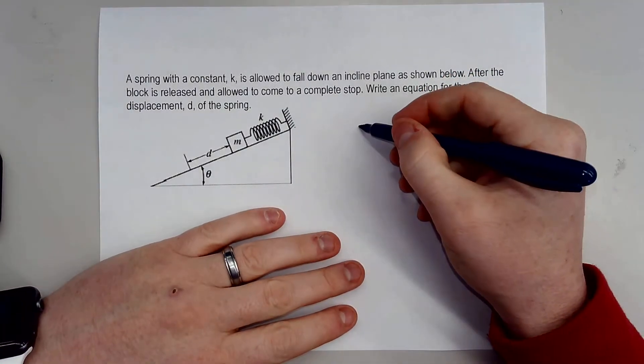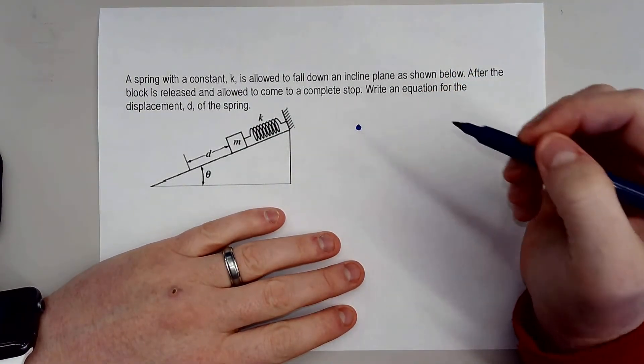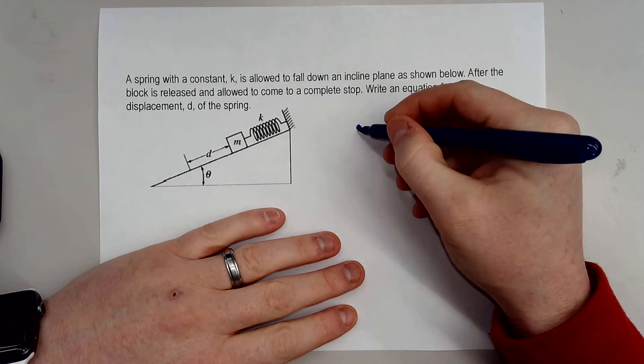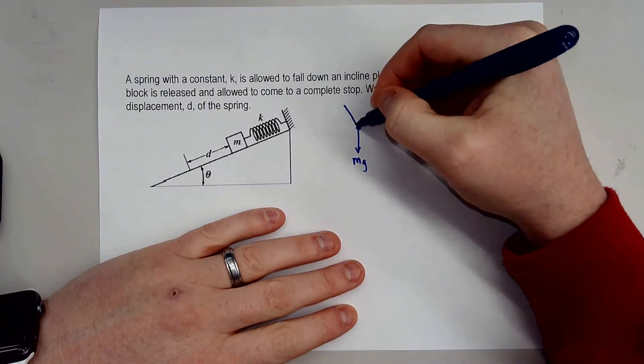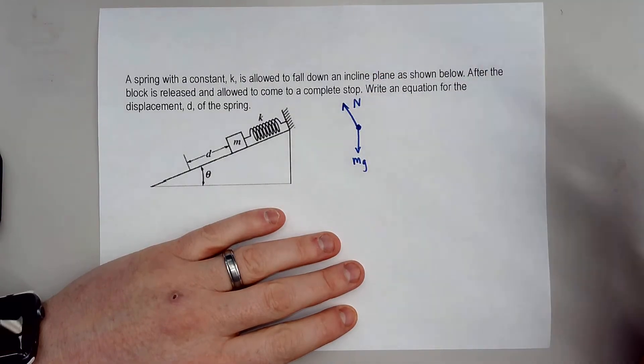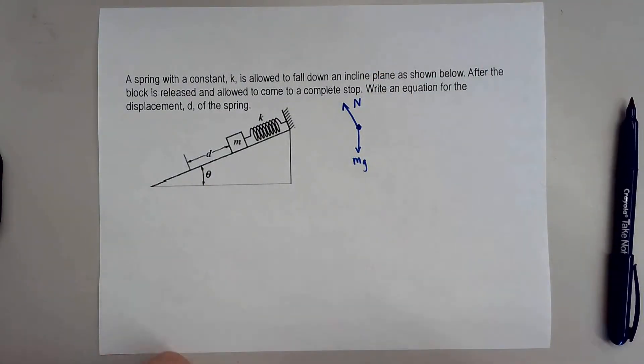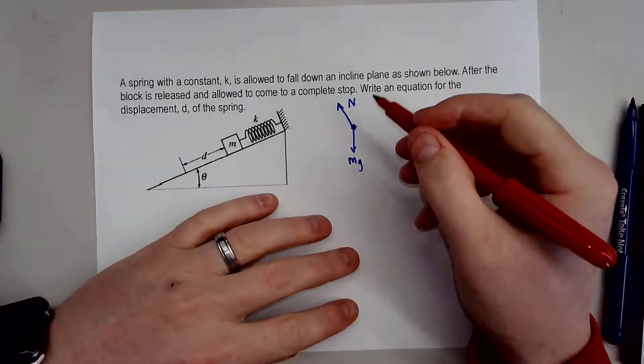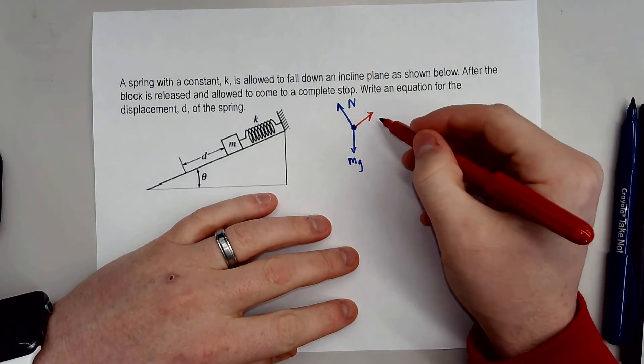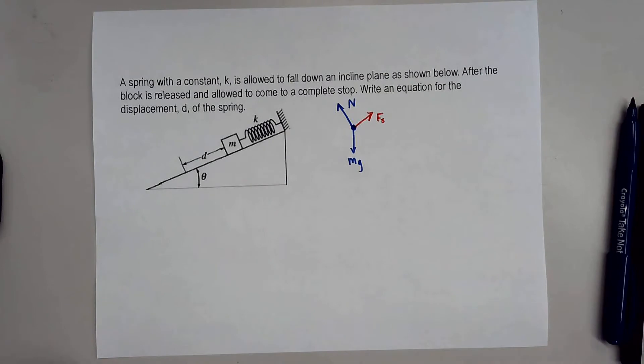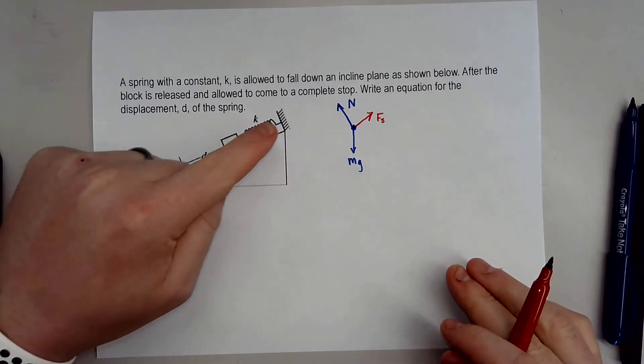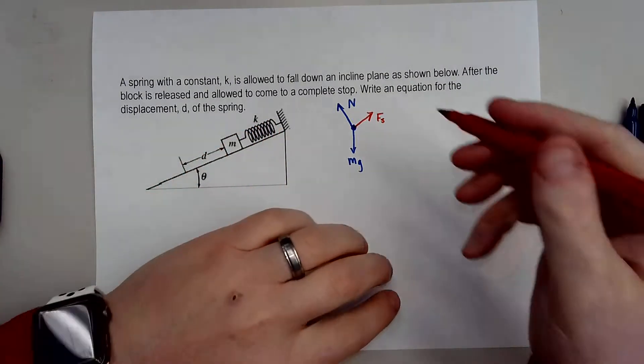Well, the first thing we need to do is draw the free body diagram. I'm going to draw this dot diagram for this block. In this situation this block does have some mass times gravity, it does have a normal force, and there actually is a force that's pulling this object back up the ramp and that's actually the force of the spring. So this force is applying a force up the ramp that's going to keep this block standing still.